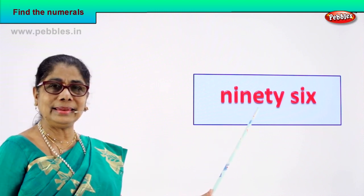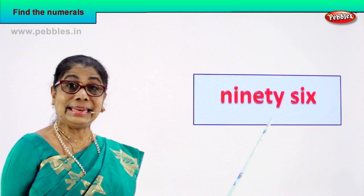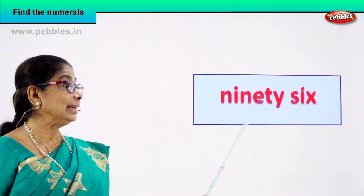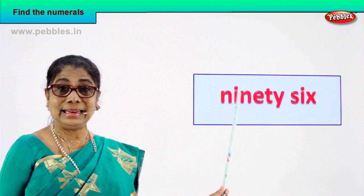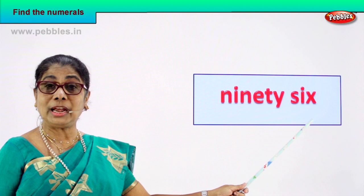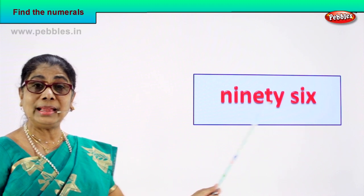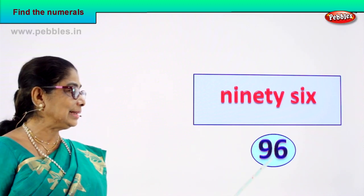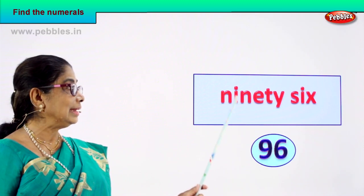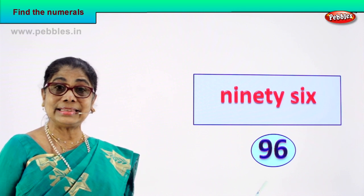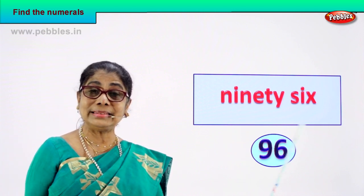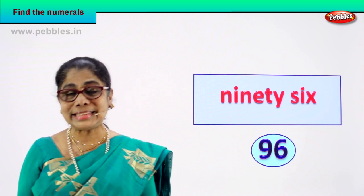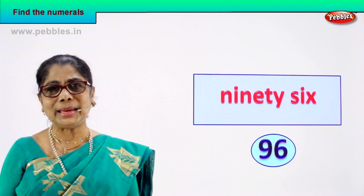Shall we take another number name? Read: N-I-N-E-T-Y is ninety, S-I-X is six — 96. 96 is the name of a numeral. How will you write that numeral? 96 — you can write it as 9 and 6, 96. Good!